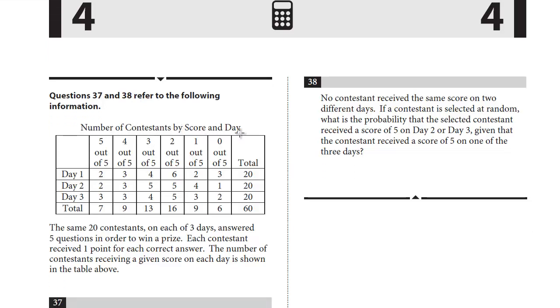We have the number of contestants by score and day, three different days, and the different scores between five and zero.